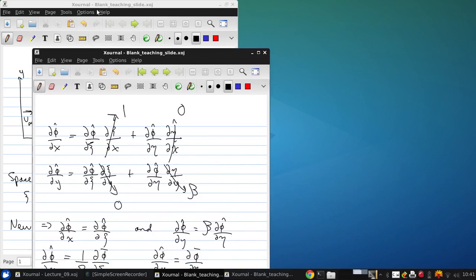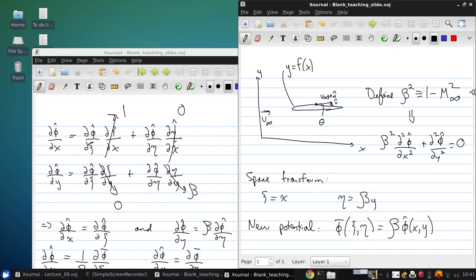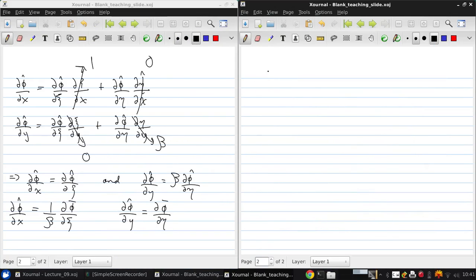Then, we can also get the second derivatives. Here, we can write that d squared phi hat dx squared is 1 over beta squared d squared phi bar d xi squared. And d squared phi hat dy squared is d squared phi bar d eta squared.